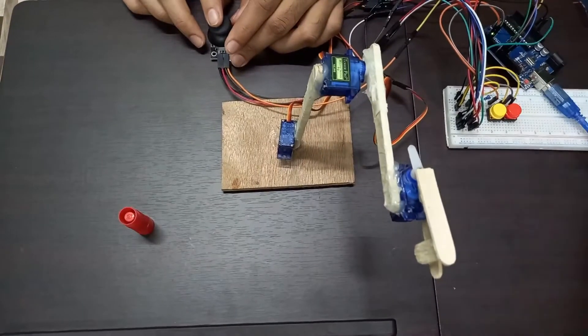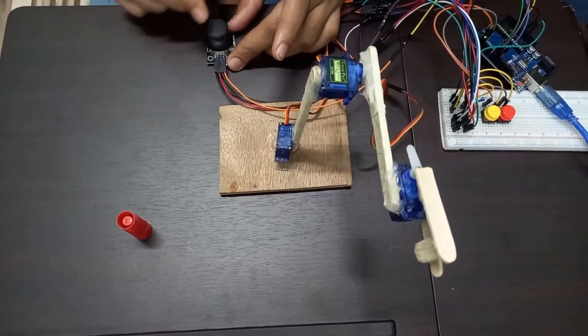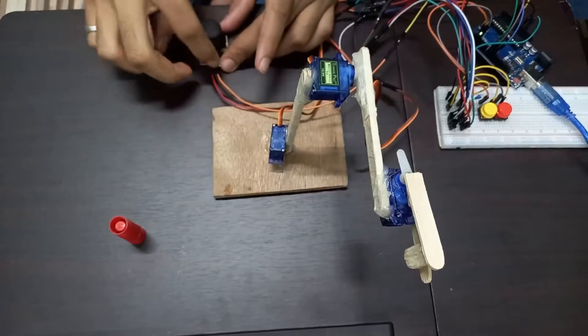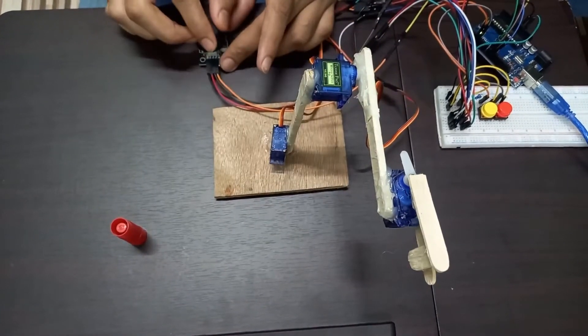Now we will see the demonstration of the robotic arm as we are using joystick for control of the servos. On the X axis, we are controlling the base and wrist motor. On the Y axis of joystick, we are using the arm of the robot.